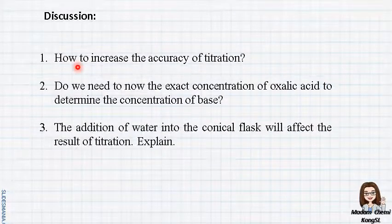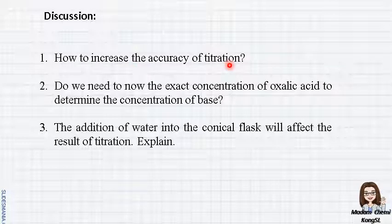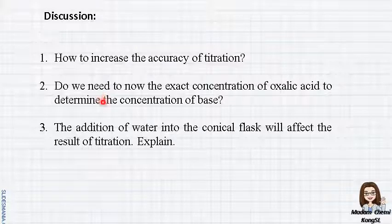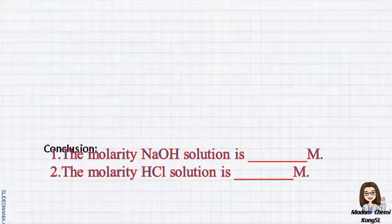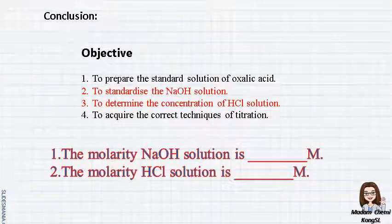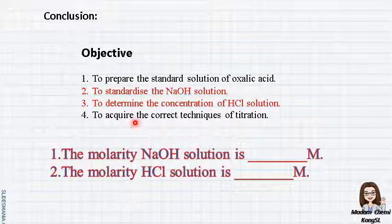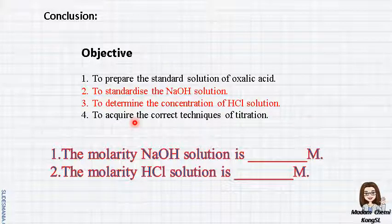For the discussion part, you just need to answer these questions. First, how to increase the accuracy of titration? Second, do we need to know the exact concentration of oxalic acid to determine the concentration of base? Third, will the addition of water into the conical flask affect the result of titration? Explain. For the conclusion, remember that conclusion must always refer to your objectives. The first and fourth objectives are related with your skills, so they do not need to be included as conclusions. You just need to answer for the second and third objectives: what is the molarity of sodium hydroxide, and what is the molarity of hydrochloric acid calculated from the result and calculation part.